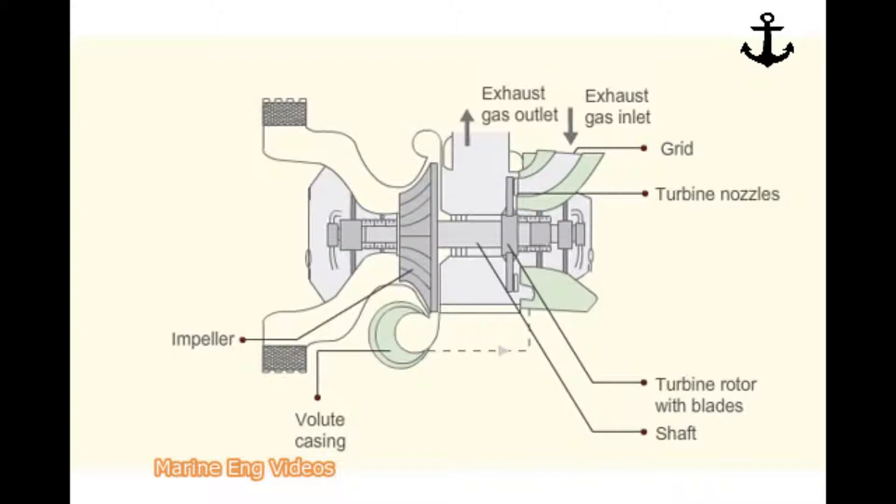At the blower end, the impeller draws air from the engine room atmosphere through the silencer air filter. The air inlet passage is called inducer. It guides the air smoothly to the impeller.